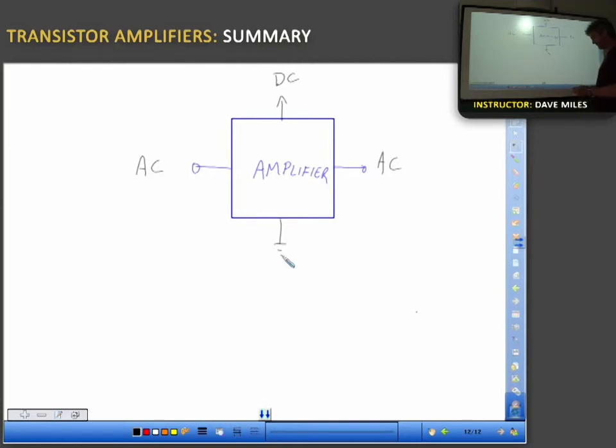We also talked about the calculations. So we have an AC signal on the input. We have signal on the output. The gains are always, gain represented by A always equals output divided by input. Whether it's the power gain, the voltage, or the current.